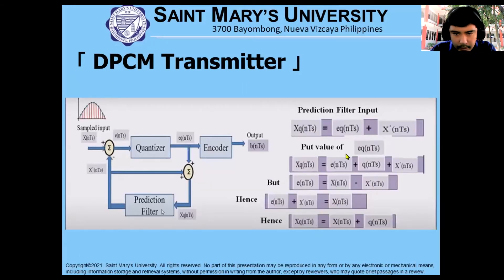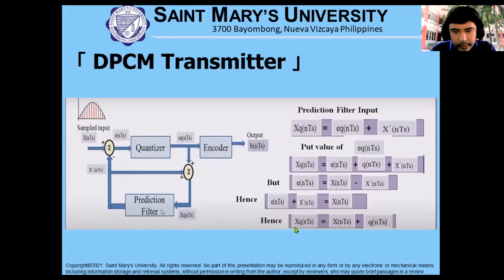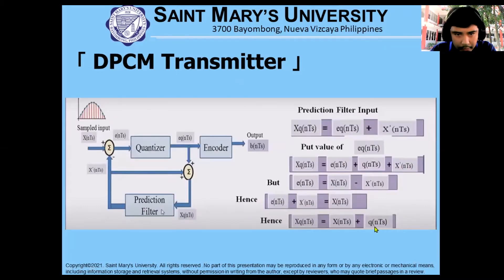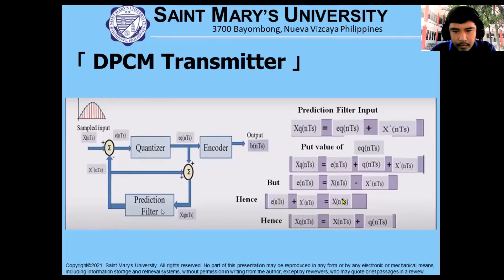Continuing to transpose that to the left side, we now have the input signal. To solve finally for the prediction filter input, we need to add the input signal and q-NTS, which is the output at the quantizer. We substitute from this: xq-NTS, e-NTS, and x-prime NTS — substituting that into this equation plus the quantizer gives us the prediction filter.